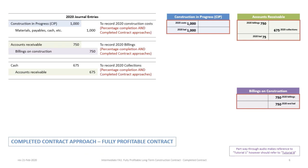Now we'll review the journal entries for 2020. As presented in Tutorial 8, the first journal entries are basically the same for both percentage of completion and completed contract. We record construction in progress for $1 million in costs, billings of $750,000 to accounts receivable and billings on construction, and a collection entry of $675,000. This leaves us with a balance of $1 million in construction in progress, $75,000 in accounts receivable, and $750,000 in billings on construction.